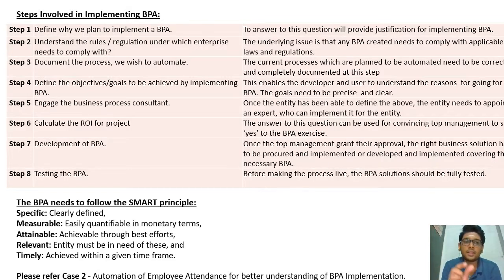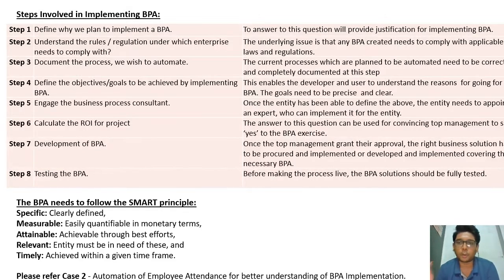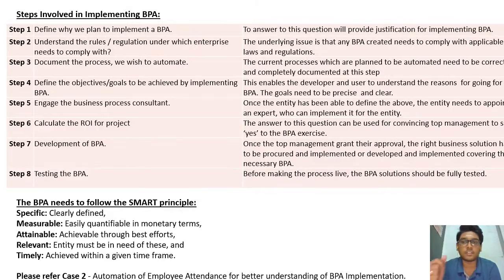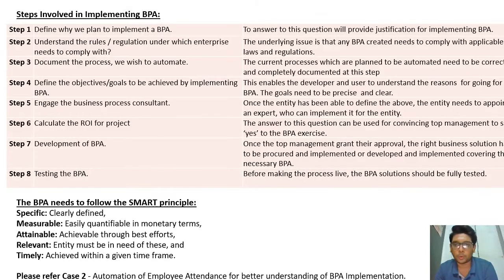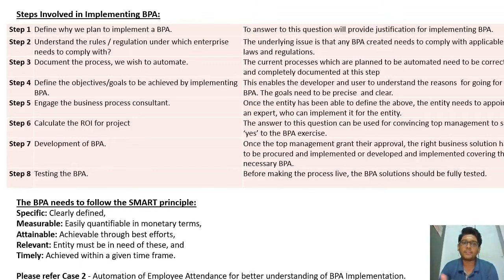Step six: calculate the return on investment (ROI) for the project — this helps convince top management to approve the BPA exercise. Step seven: development of BPA — once top management grants approval, the right business solution must be procured and implemented or developed, covering all necessary BPA requirements. Step eight: testing the BPA — before making the process live, the business solution should be fully tested.